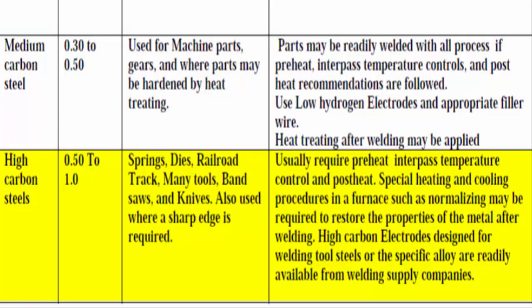High carbon steels, content 0.50–1.0%. Typical usage: springs, dies, railroad track, many tools, band saws, and knives. Also used where a sharp edge is required. Weldability: usually requires preheat, interpass temperature control, and post-heat. Special heating and cooling procedures in a furnace, such as normalizing, may be required to restore the properties of the metal after welding. High carbon electrodes designed for welding tool steels of the specific alloy are readily available from welding supply companies.